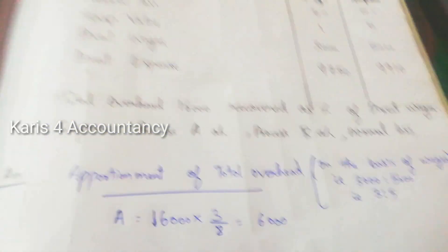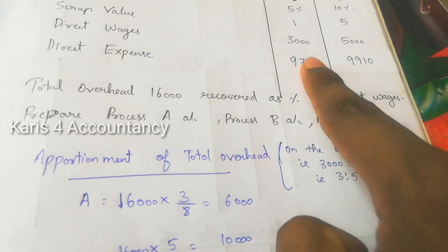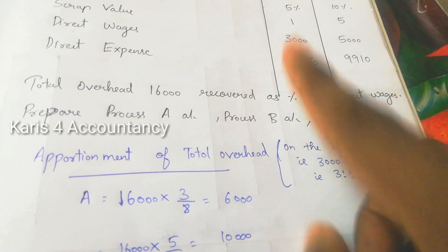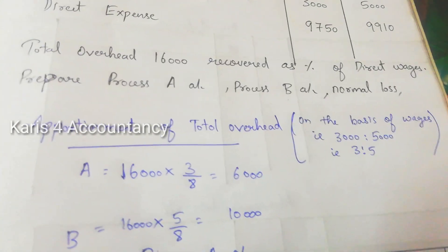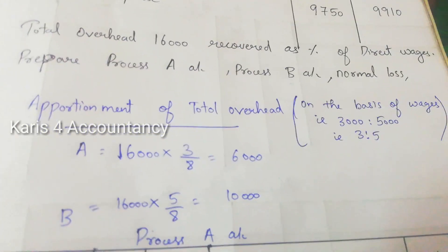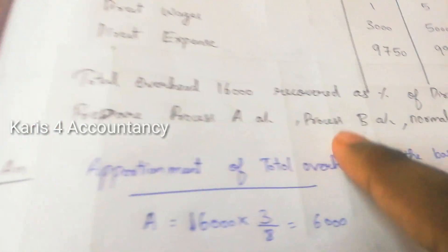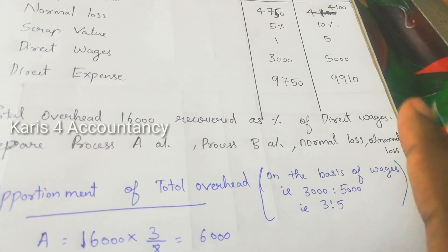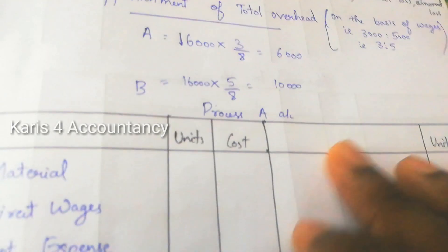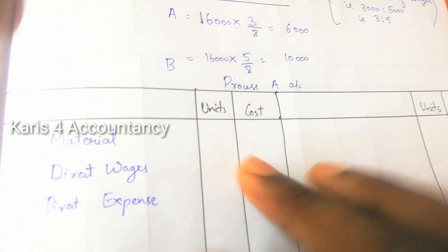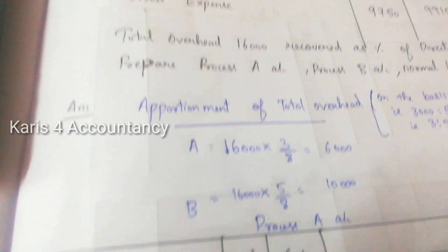Direct wages: Process A is Rs. 3,000, Process B is Rs. 5,000. The total overhead of Rs. 16,000 — when 3,000 and 5,000 are used as the basis, A gets Rs. 6,000 and B gets Rs. 10,000. Now, prepare Process A account, Process B account, Normal Loss account, and Abnormal Loss account. For Process A, we need 5,000 units of material.